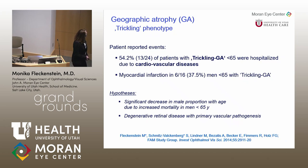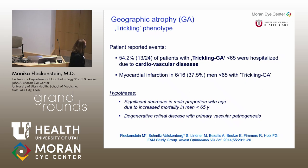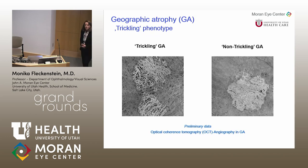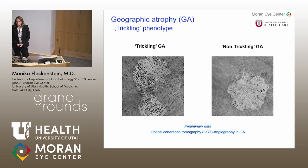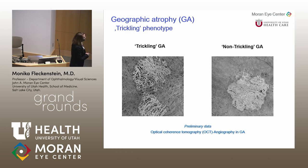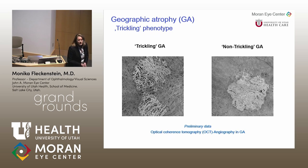Taking these findings together, we speculate that the significant decrease in male proportion with age in this specific phenotype is due to an increased mortality in men, and that this is a degenerative retinal disease mainly caused by vascular changes — suggesting a primary vascular pathogenesis. OCT angiography examination underscored this hypothesis: at the level of the choroid, we see a rarefication of the choroidal structure in the trickling phenotype, both within the geographic atrophy lesion and outside it — which is not as obvious in other GA phenotypes.